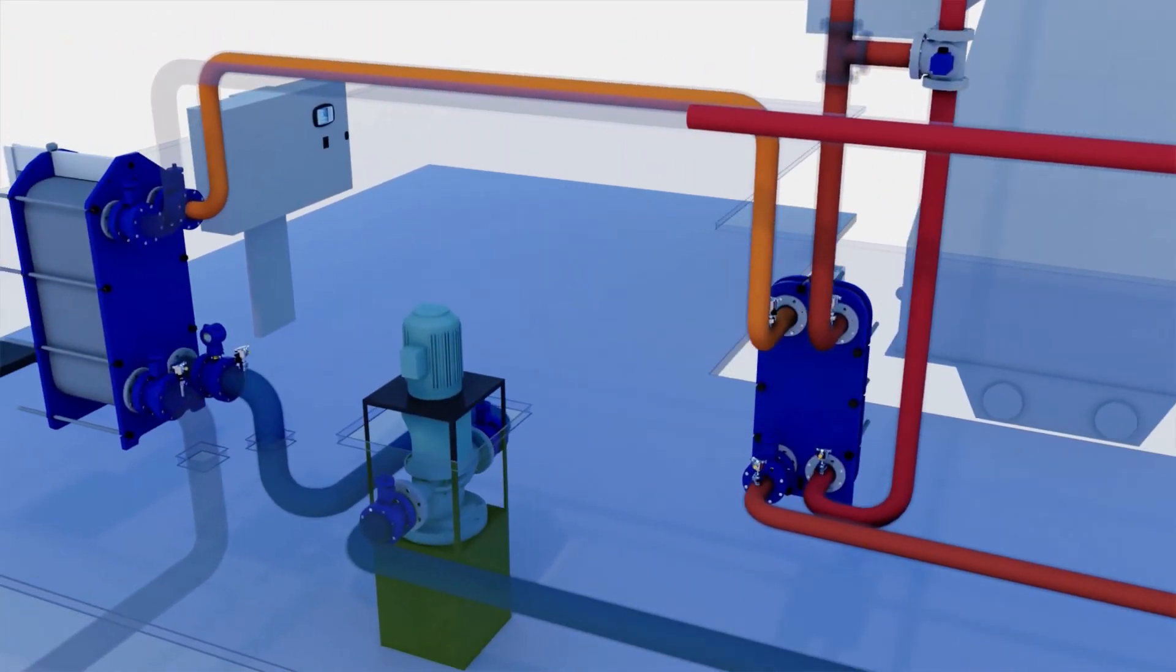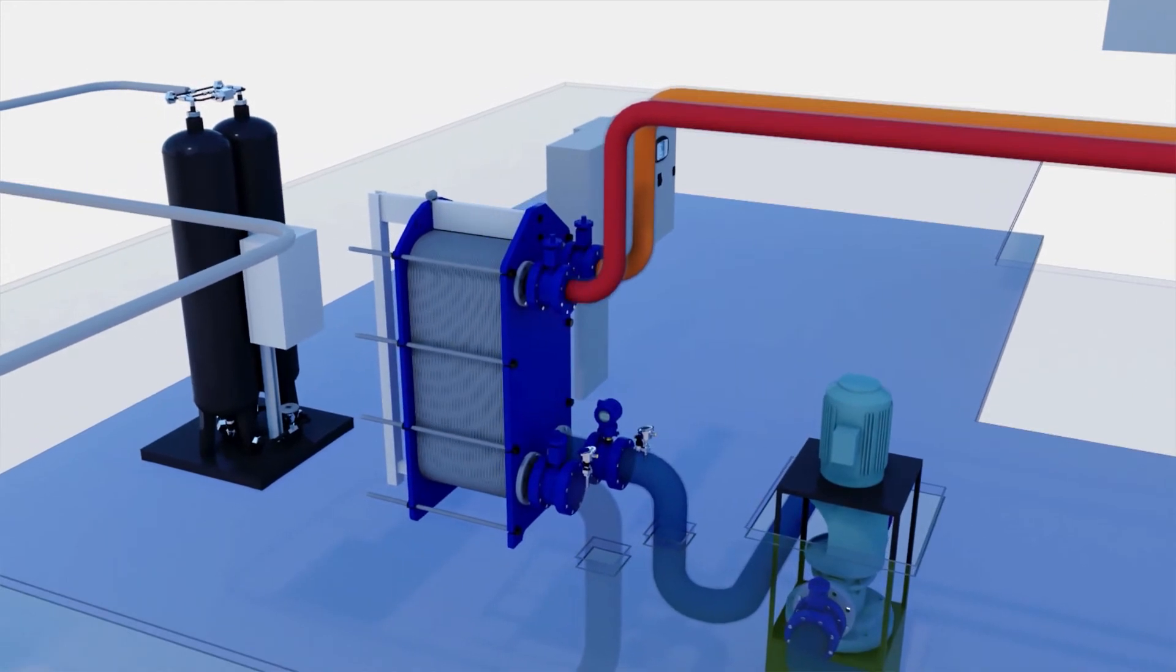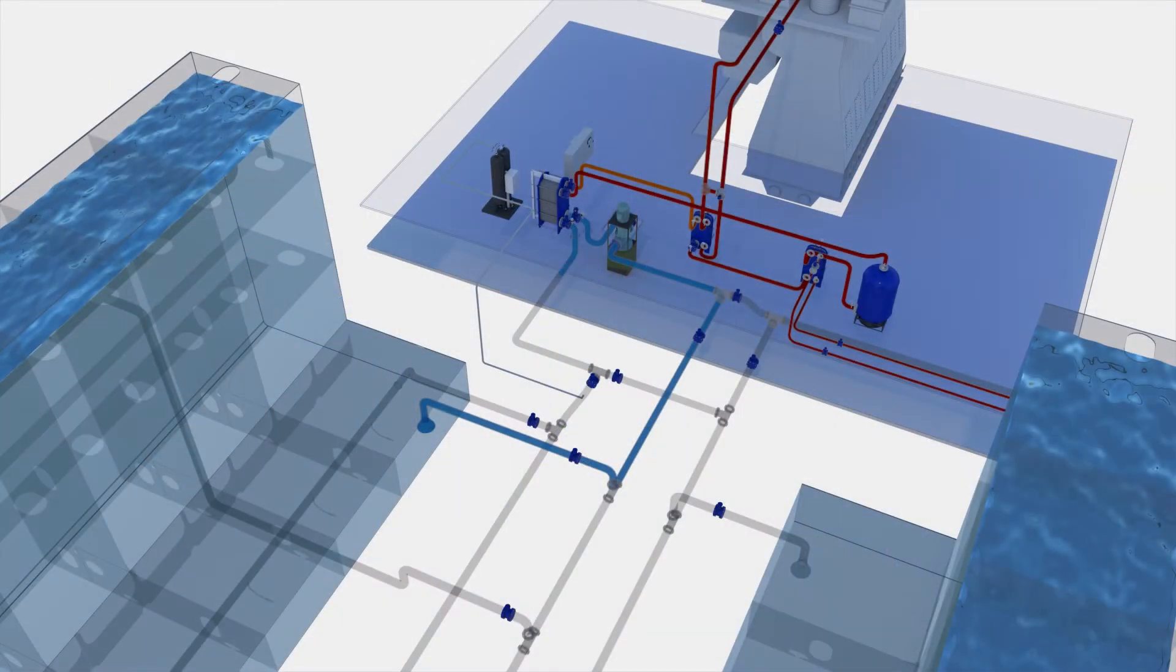The pasteurized water flows back through the regeneration section, preheating the incoming ballast water on its way. This saves a lot of energy. The water is now treated and can be pumped overboard or to another ballast tank.